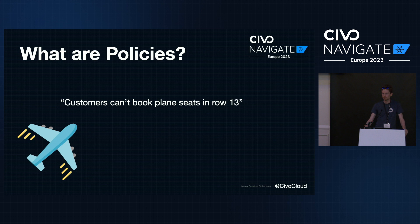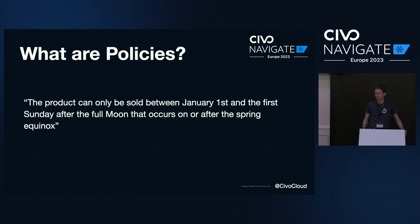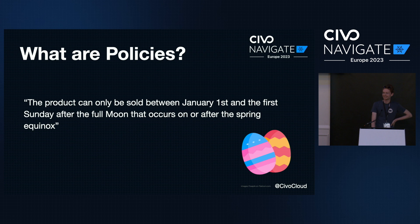But this is a talk about OPA and WASM, and running policies in places you wouldn't normally think you are running policies. Here's another policy: customers can't book plane seats in row 13. Most planes in the Western world don't have a row 13. You might want a rule in your application processing plane seat bookings that says no bookings in row 13. Here's another fun policy — there is a product in the UK sold with the rule that it can only be sold between January 1st and the first Sunday after the full moon after the spring equinox. Anyone want to guess? Easter eggs.